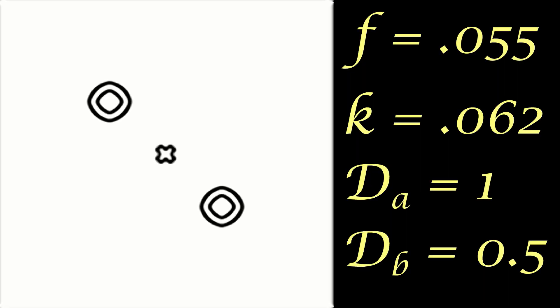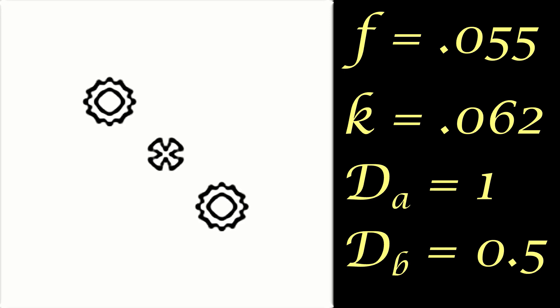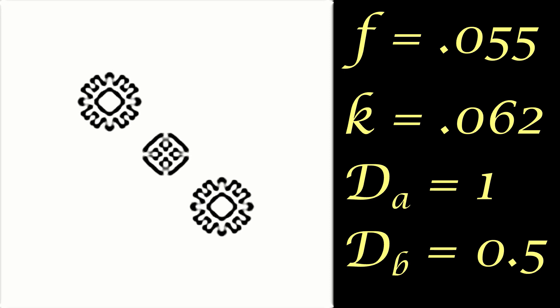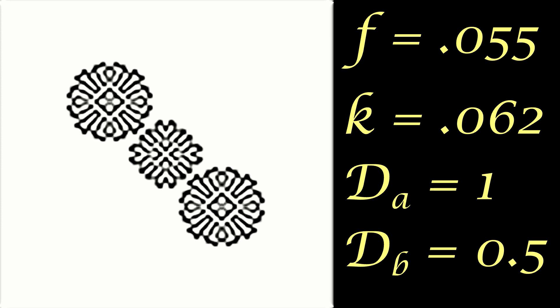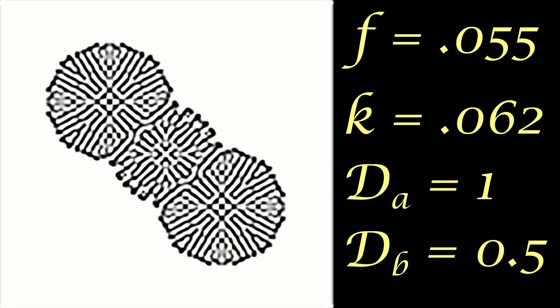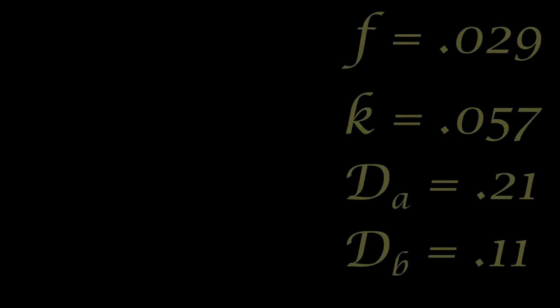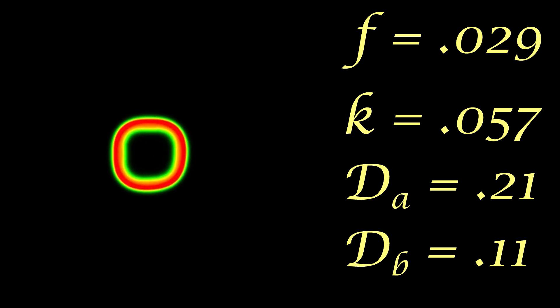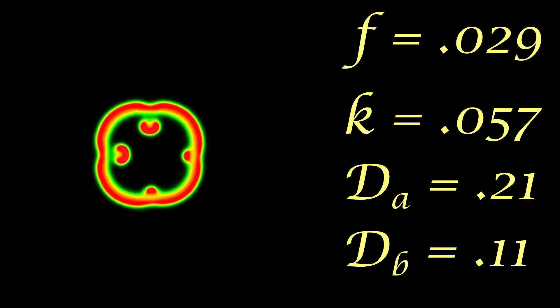Tweaking the various parameters within the equations can result in some weird and wonderful shapes and patterns. These shapes emerge by making small changes to things like the diffusion rates of the chemicals as well as the feed and removal rates. In the example shown, chemical A is white. I've added a few rings of chemical B in black and set it running, with the settings for feed and kill rates shown on the right, alongside the initial diffusion rates for both chemicals. Making small changes to the feed and kill rates can result in a great variety of shapes and patterns being produced.